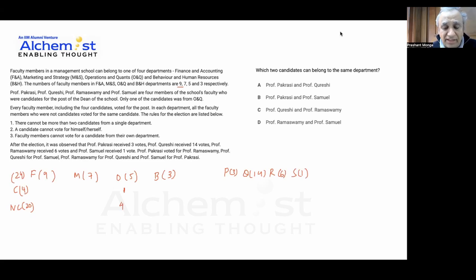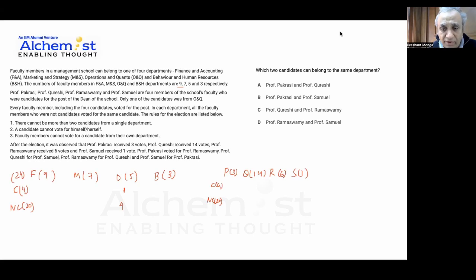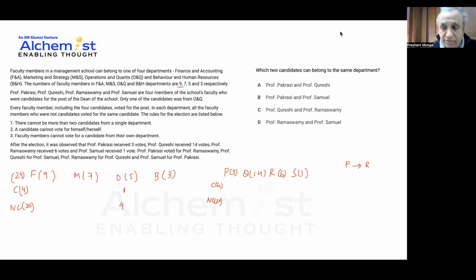Since non-candidates vote in a block, we know there will be candidate votes and non-candidate votes, which are 4 and 20 in number respectively. So we can write 4 for candidate votes and 20 for non-candidate votes. Professor Prakashi voted for Ramaswami, and Professor Kurishi voted for Samuel.